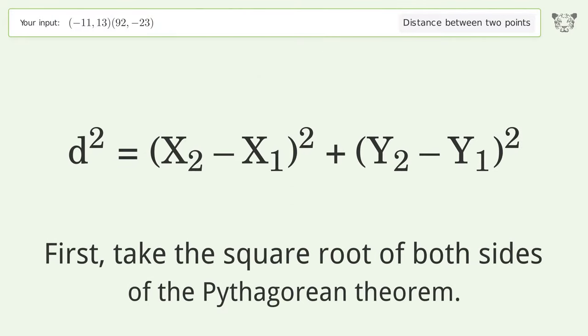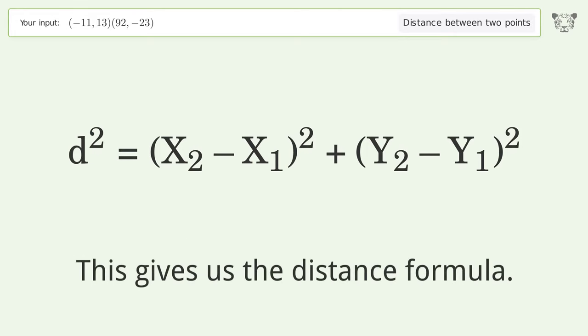First, take the square root of both sides of the Pythagorean theorem. This gives us the distance formula.